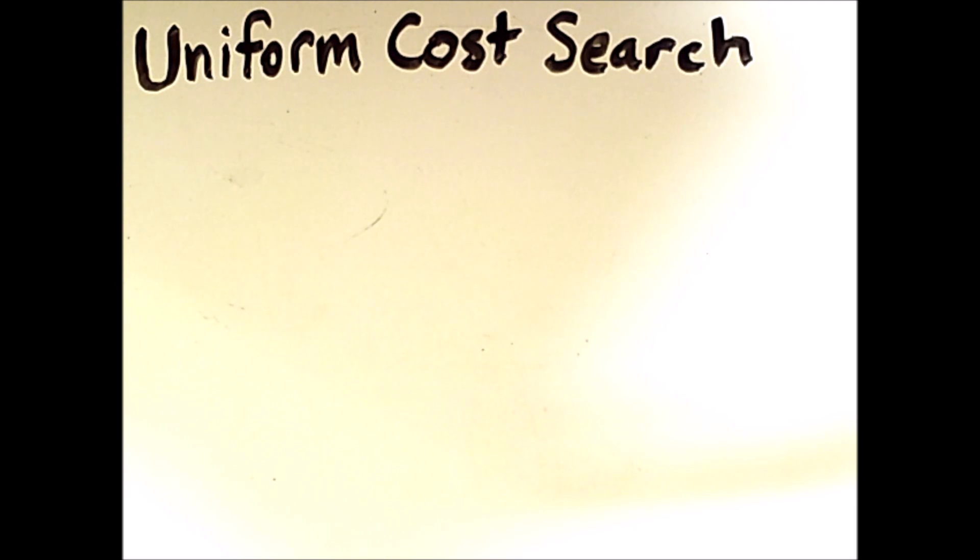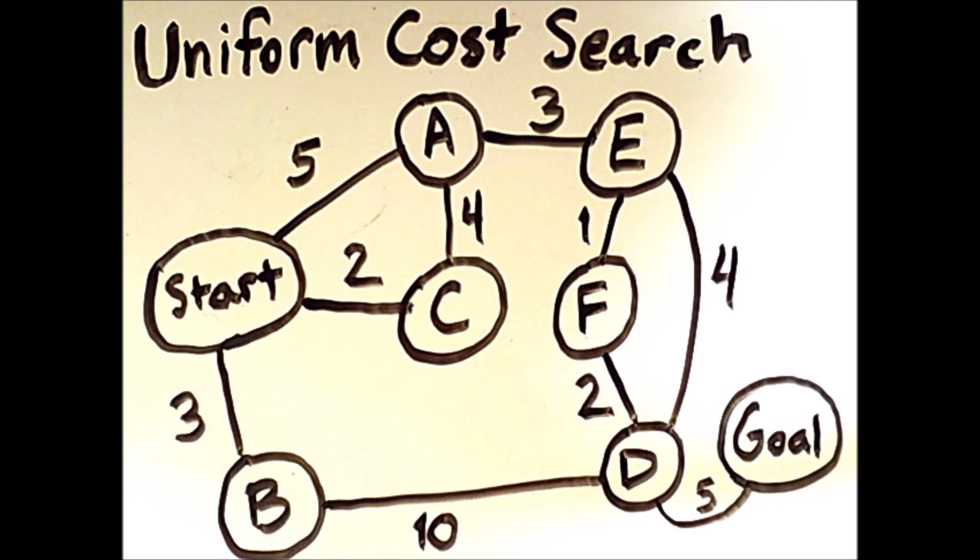But what if different actions have different costs? Sometimes individual actions have a cost in terms of time, money, distance, or some other metric. This graph is an abstract representation of a search problem with a single start state and a single goal state.